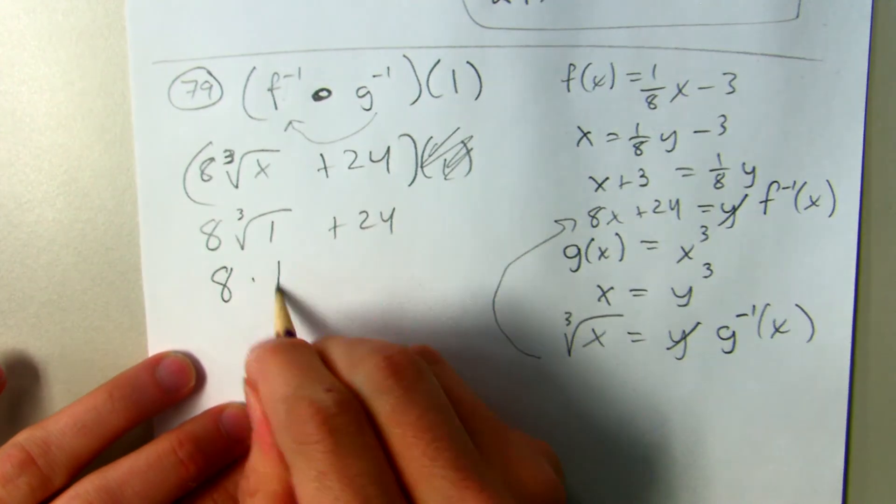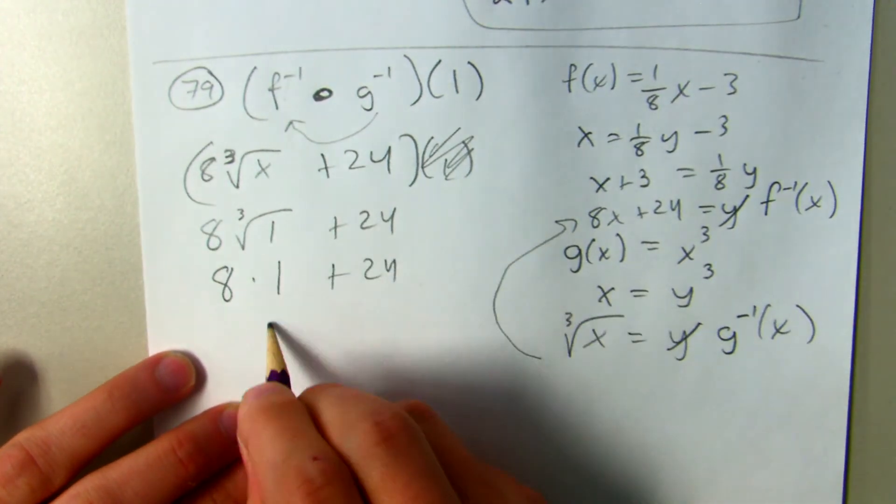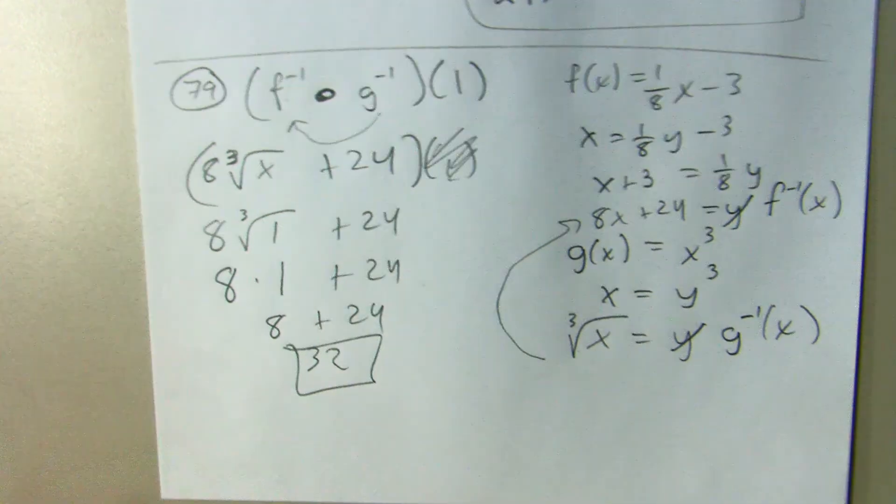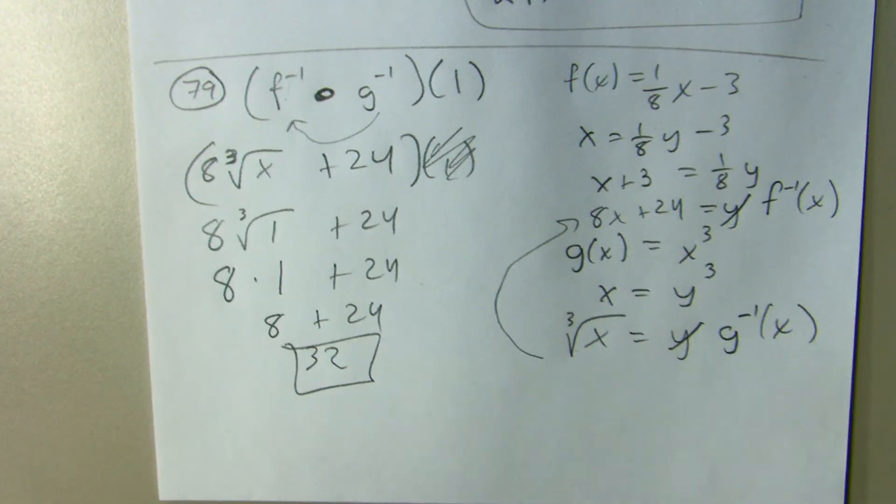So if the cube root of 1 is 1, times that by 8, add it to 24, and so I should be coming up with 32.